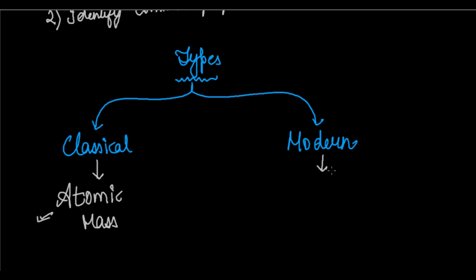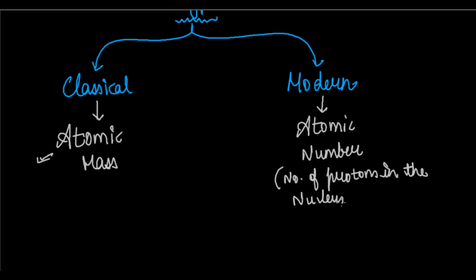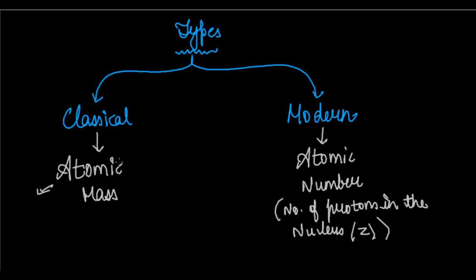The modern form of classification did not revolve around atomic mass but around atomic number. Atomic mass is the mass of an atom with respect to 1/12 part of a carbon-12 isotope. Atomic number is the number of protons in the nucleus, and it is denoted by Z. So classical methods used atomic mass while the modern method uses atomic number.